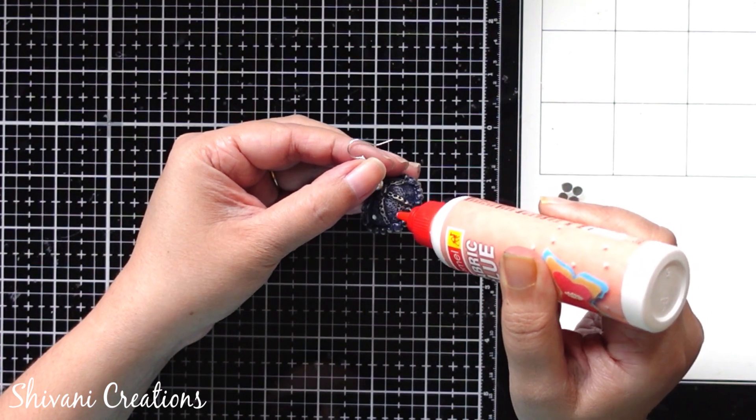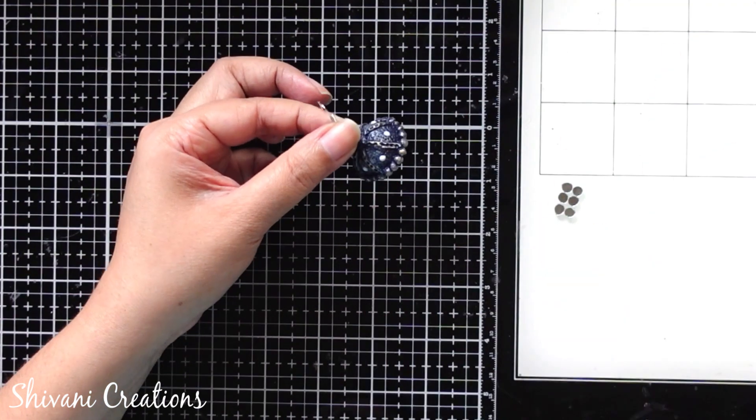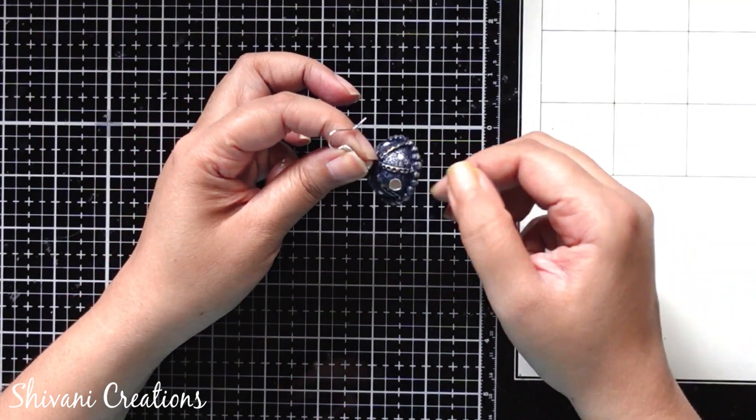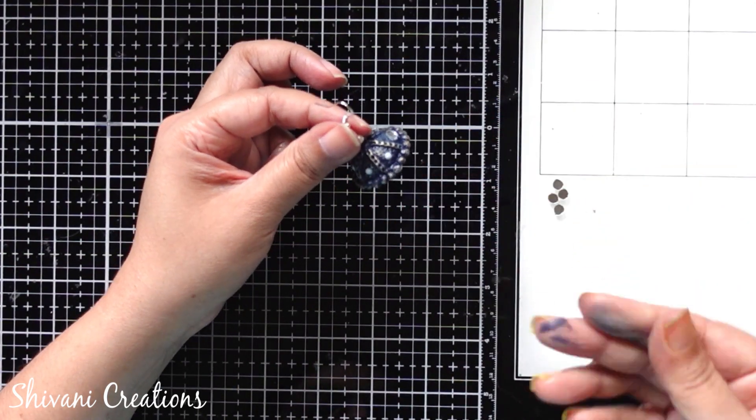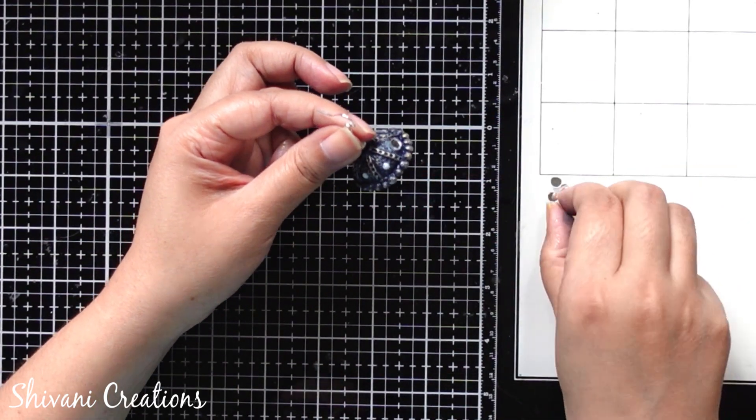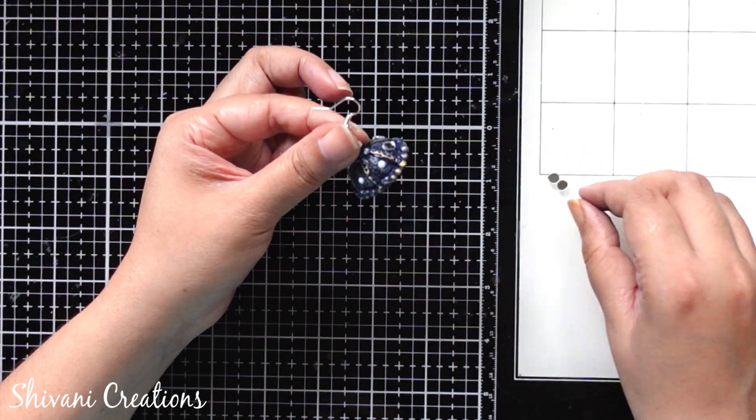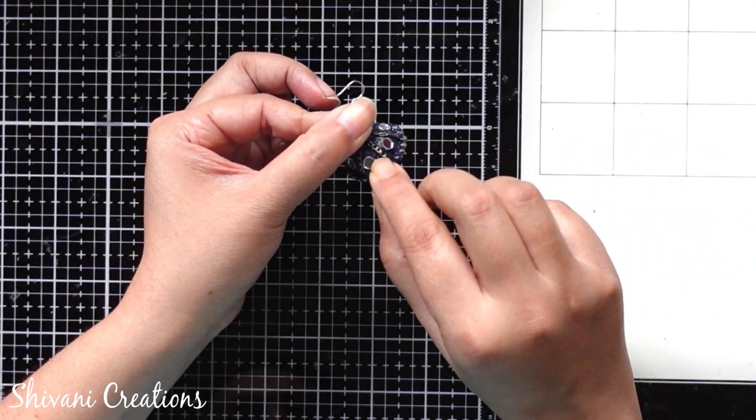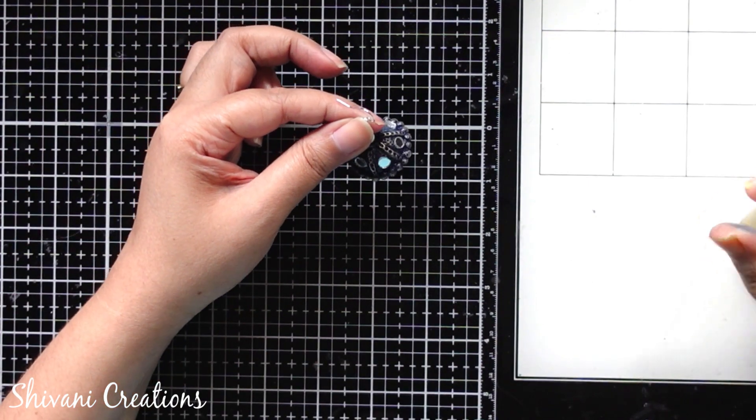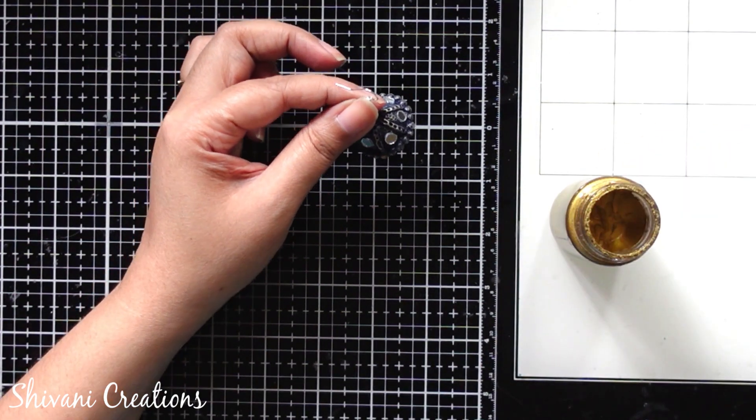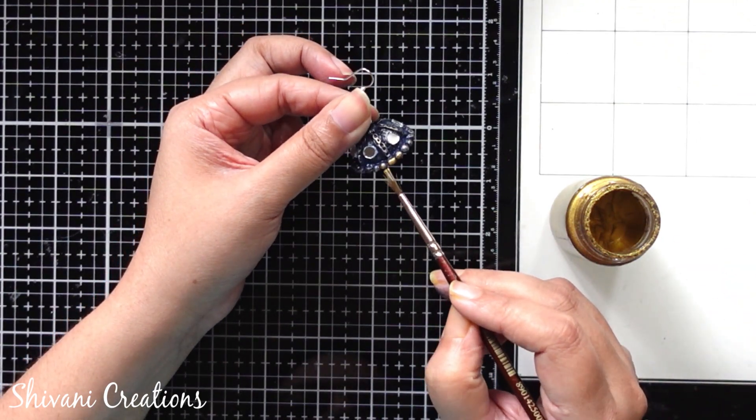Then between these partitions which we have created, I am adding six small size mirrors. And then using gold acrylic color I am doing a little more highlights.